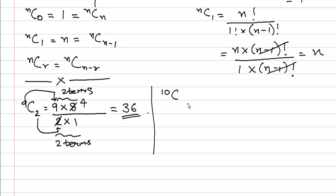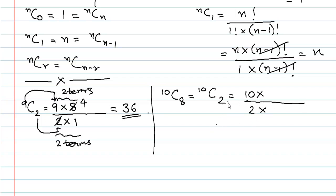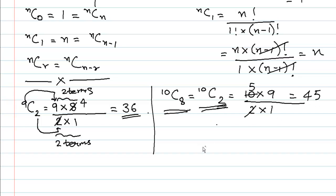Let us find 10C8. We rewrite it as 10C2 because 8 plus 2 equals 10. The numerator starts at 10 with 2 terms: 10 multiplied by 9. The denominator is 2 multiplied by 1. Cancelling: 2 into 1 gives 2; dividing 10 by 2 gives 5; so 5 into 9 is 45. Therefore 10C8 and 10C2 both equal 45.